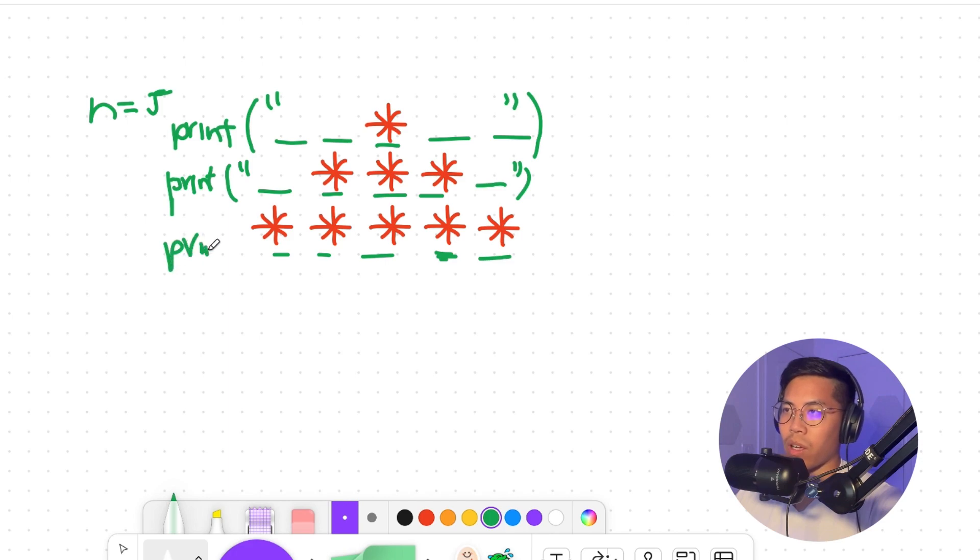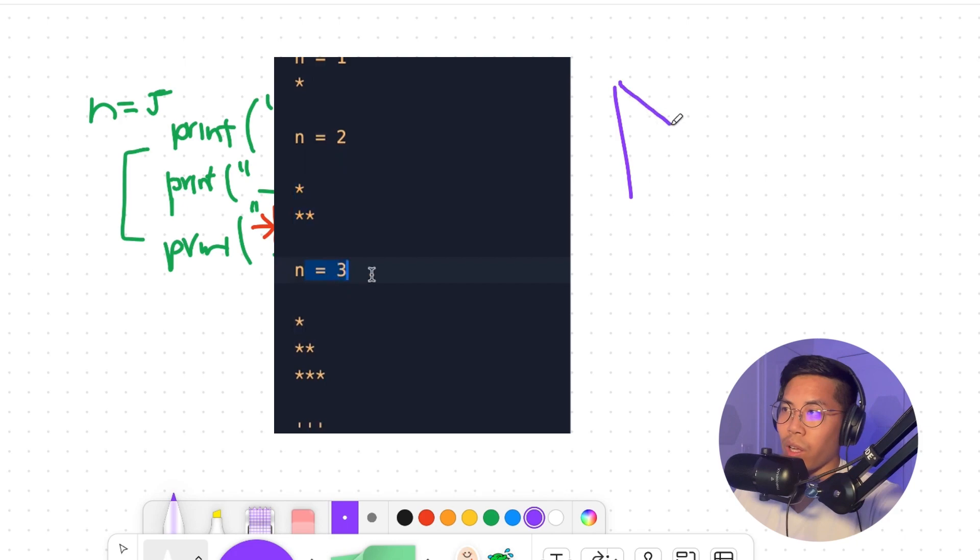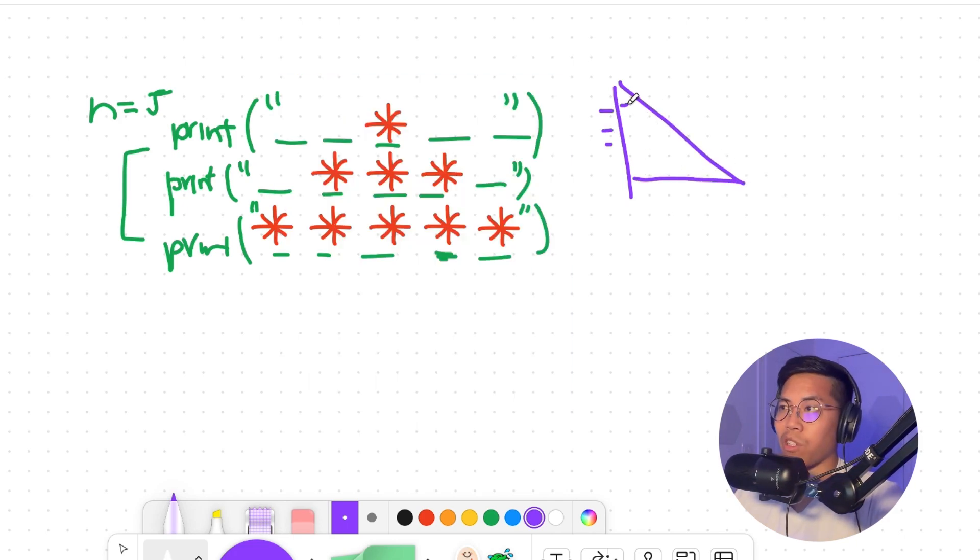And then we print one more time. And in this print, we don't have any spaces at all. So this is what your program should look like if you have n equals five. In the previous lesson, we drew a right angle triangle like this, where there are no leading spaces at all. And we just print out the star right away. And then we print two stars, then we print three stars.